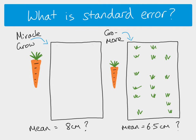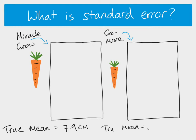If you measured the length of every single carrot in the whole population, that would give you the true mean. Doing that reveals the true mean for Miracle Grow is seven point nine centimeters — different from our sample mean of eight centimeters. For Grow More, every single carrot gives a true mean of seven point four centimeters, but our sample mean was only six point five. You rarely calculate the true mean because there are too many individuals to count — that's why we sample. Standard error is about comparing the sample mean to estimate whether it is representative of the true mean.